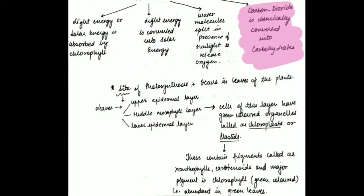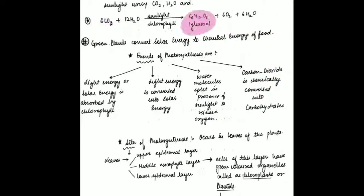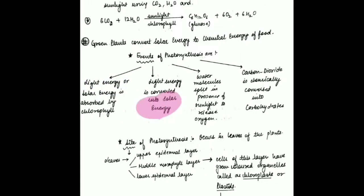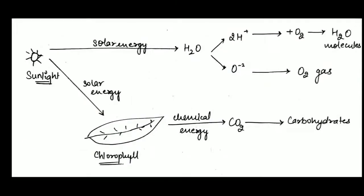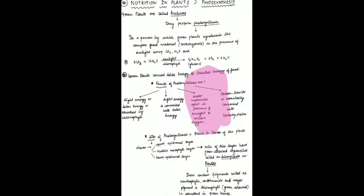This chemical energy helps convert carbon dioxide into carbohydrates, because the chemical energy provides the energy to perform the chemical reaction in which carbon dioxide gets converted into glucose. In the presence of sunlight and chlorophyll, the light energy captured by the middle mesophyll layer fixes solar energy into chemical energy that converts carbon dioxide into carbohydrates. The sunlight captured by the leaf is converted into chemical energy, which in turn converts carbon dioxide into carbohydrates. Additionally, water molecules also get split in the presence of sunlight to release oxygen.